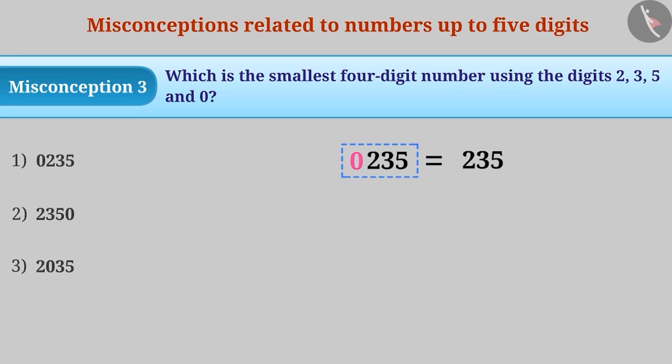Many times, without understanding the question, we select option 1 to be the correct answer, since we see it as a 4 digit number, beginning with the smallest digit 0.